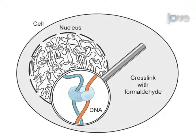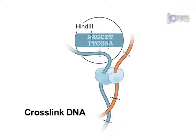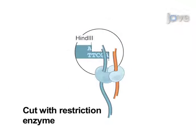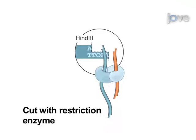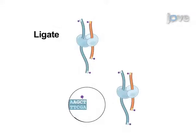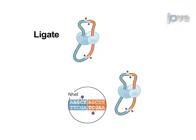First, cells are fixed with formaldehyde, cells are lysed, and the DNA is subsequently fragmented with a restriction enzyme. Next, a biotinylated residue is incorporated as the five prime overhangs are filled in. Blunt-end ligation is performed under dilute conditions that favour ligation events between cross-linked DNA fragments.